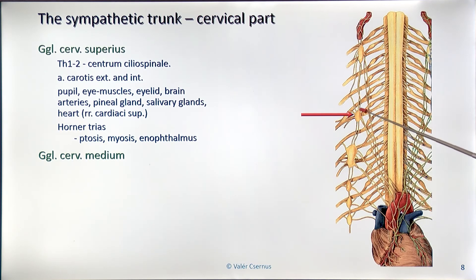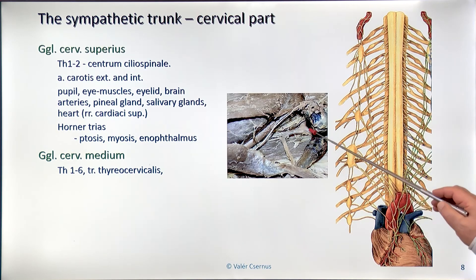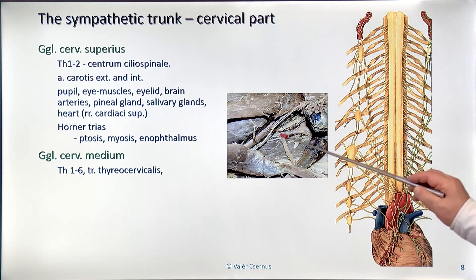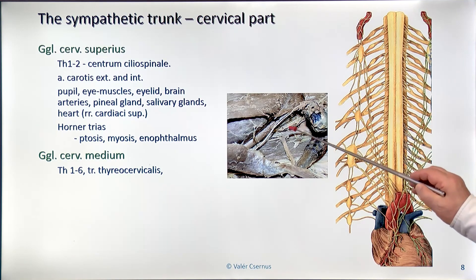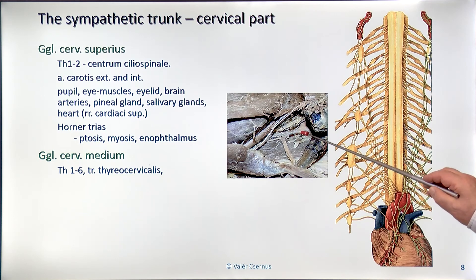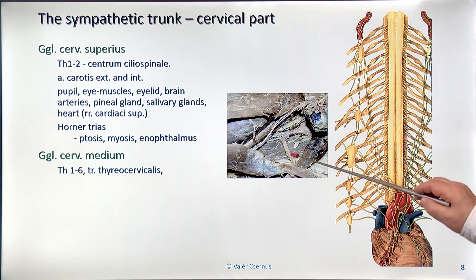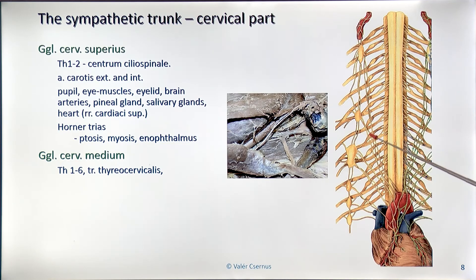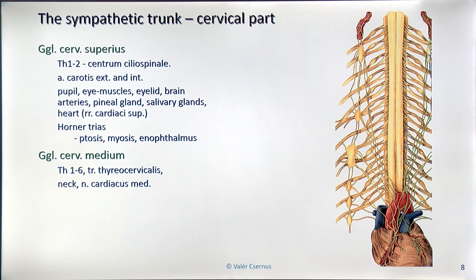The middle cervical ganglion is located behind the arteries supplying the neck — the thyroid arteries from the thyrocervical trunk. The branch of the cervical trunk is responsible for supplying most of the neck. The post-ganglionic fibers from this ganglion go along the artery and control blood supply to the neck. There are also nerve fibers going to the coronary arteries — these are the middle cardiac nerves.